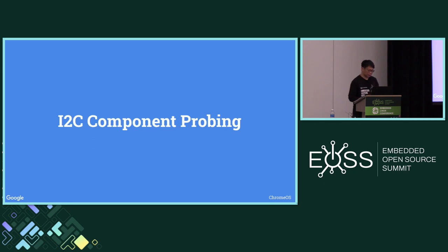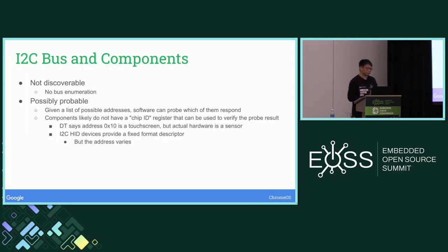Now for some solutions. For I2C components that don't have conflicting addresses: I2C bus is not discoverable and there's no enumeration — the expectation is you describe the device in the device tree. It is possible to probe the device: if you tell it there's a trackpad at a given address, you can send a simple transfer, and if it replies, maybe the trackpad is there. But there's no guarantee the device that responded is the one you're expecting. Most I2C components don't have a chip ID you can verify. The only exception is I2C HID devices, which provide a fixed-format descriptor, though the descriptor is not always at the same register address.